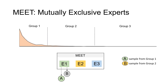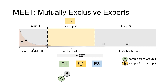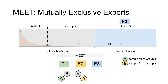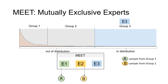Similarly, Expert 2 is trained on in-distribution samples from group 2 and out-of-distribution samples from groups 1 and 3, predicting relations for sample B while A is out of its classification space. Expert 3 encounters both A and B from groups outside its classification space. Out-of-distribution predictions made by the experts are discarded.